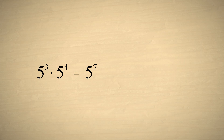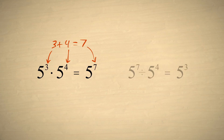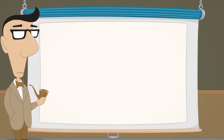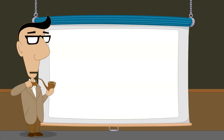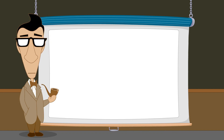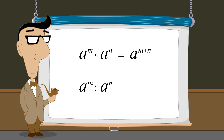Let's summarize these rules of exponents using letters instead of specific numbers. To multiply exponential expressions with the same base, add their exponents. And to divide exponential expressions with the same base, subtract their exponents.